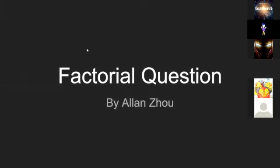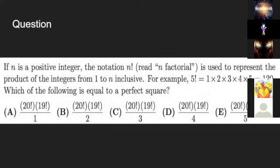Factorial question by Alan Zou. The question: if n is a positive integer, the notation n factorial is used to represent the product of the integers from 1 to n inclusive. For example, 5 factorial equals 1 times 2 times 3 times 4 times 5, which equals 120.